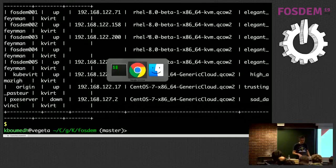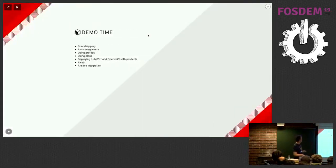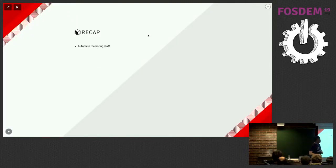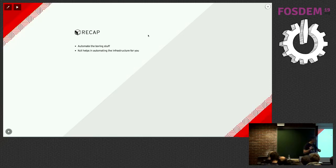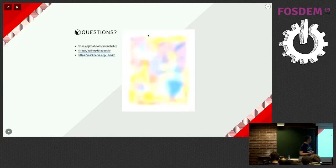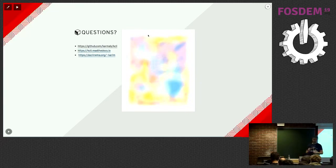I'm going to stop here because I don't want to do too much demo. To recap: automating the boring stuff, always trying to focus, and in this context kcli is a tool that helps me automate infrastructure — whether you've got a single libvirt, several ones, or you're using cloud providers. I think it's a helpful tool, so feel free to use it. If you have questions, now is the right time — otherwise here's an optical illusion picture: if you focus on any part for about 10 seconds, the image should blur and turn white.